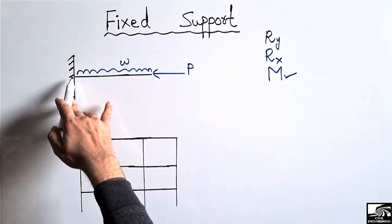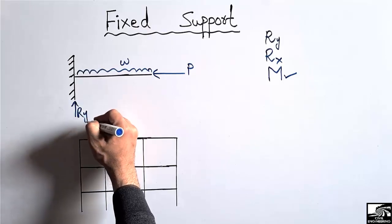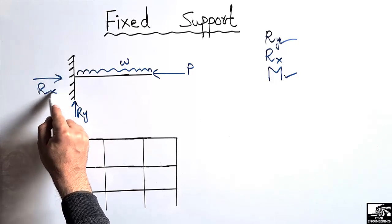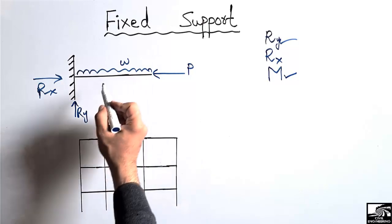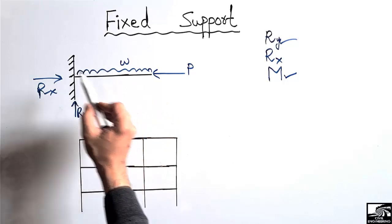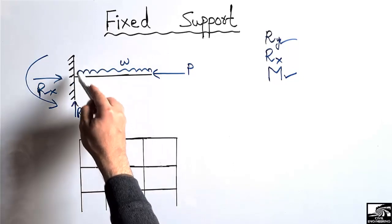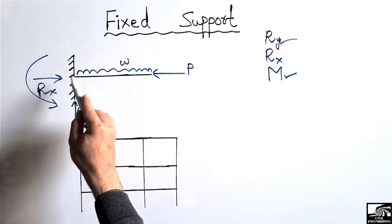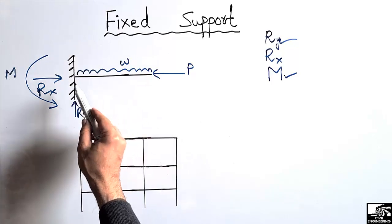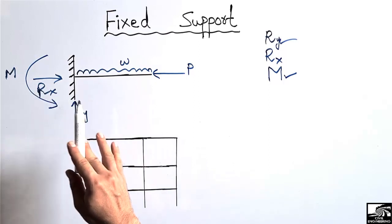Since this is a fixed support, it will resist the vertical load as Ry. It will also resist the horizontal load as Rx. Due to the vertical and uniformly distributed loads, a moment will be created in this cantilever beam, and this moment will also be taken by the fixed support, denoted as M.